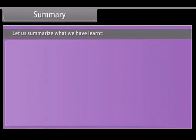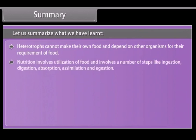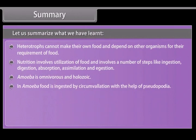Let us summarize what we have learned. Heterotrophs cannot make their own food and depend on other organisms for their requirement of food. Nutrition involves utilization of food and involves a number of steps like ingestion, digestion, absorption, assimilation, and egestion. Amoeba is holozoic. In amoeba, food is ingested by circumvallation with the help of pseudopodia. In amoeba, digestion is intracellular and occurs in the food vacuole.